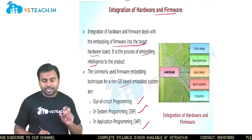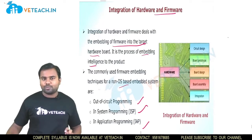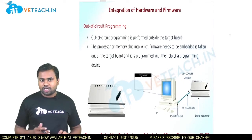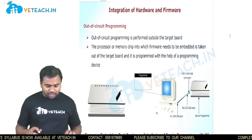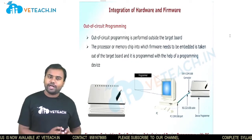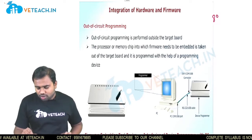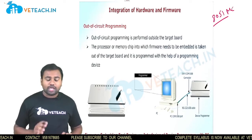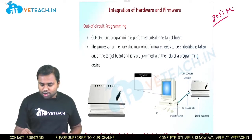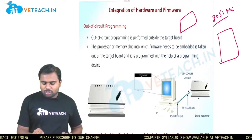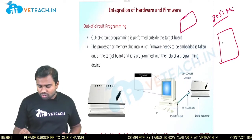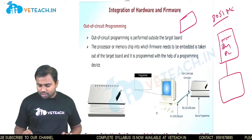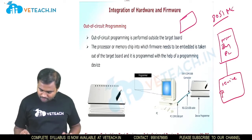For out-of-circuit programming, you need to take out the integrated circuit (IC) from the target board, connect it to a device programmer tool, connect that to a PC, and then program it. For example, the 8051 microcontroller does not support in-circuit or in-system programming, so you must remove the IC from the board, write the program on the PC, and connect to the device programmer.